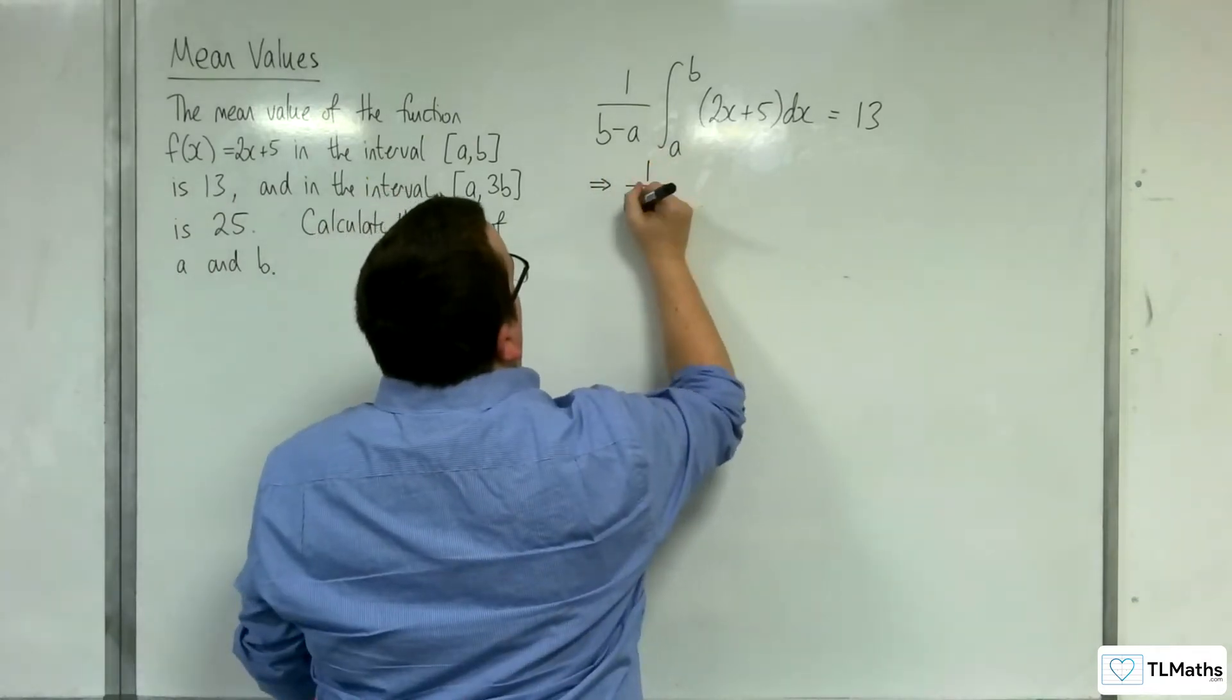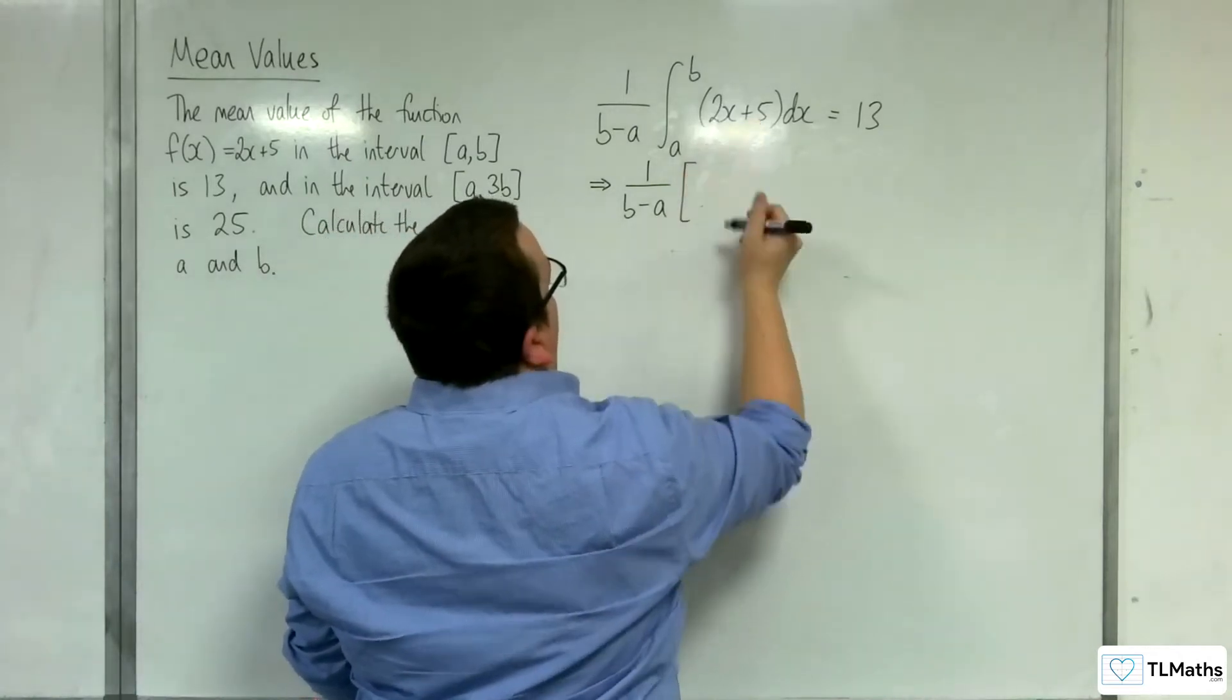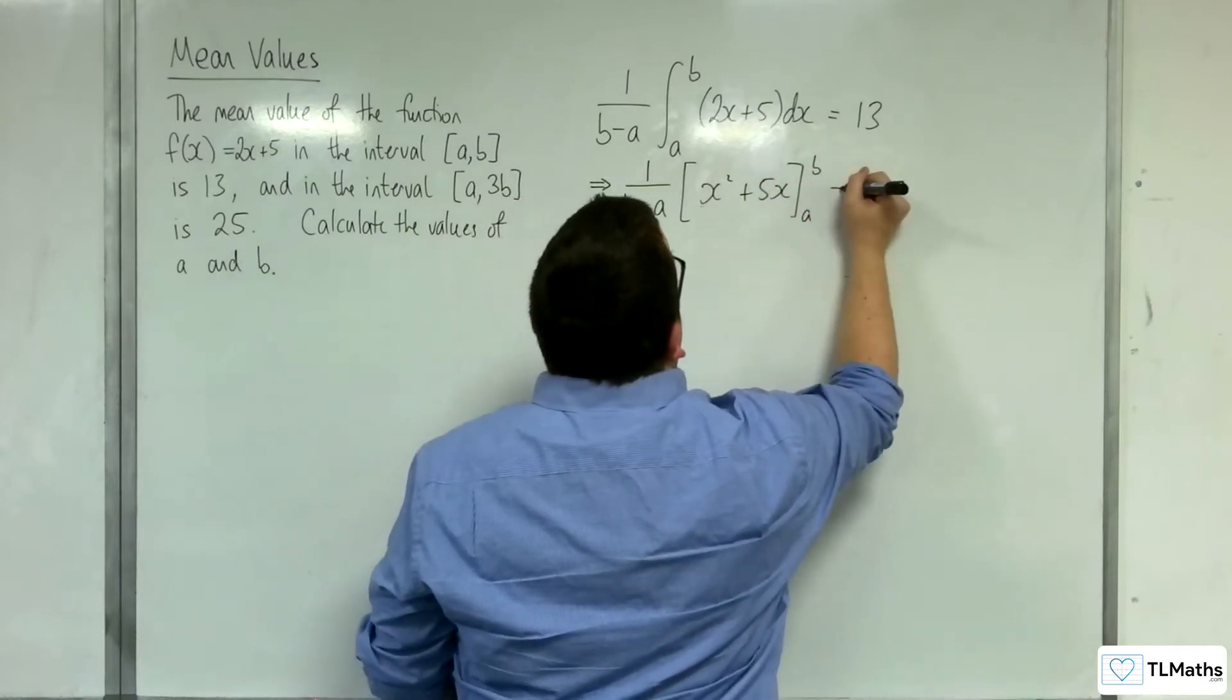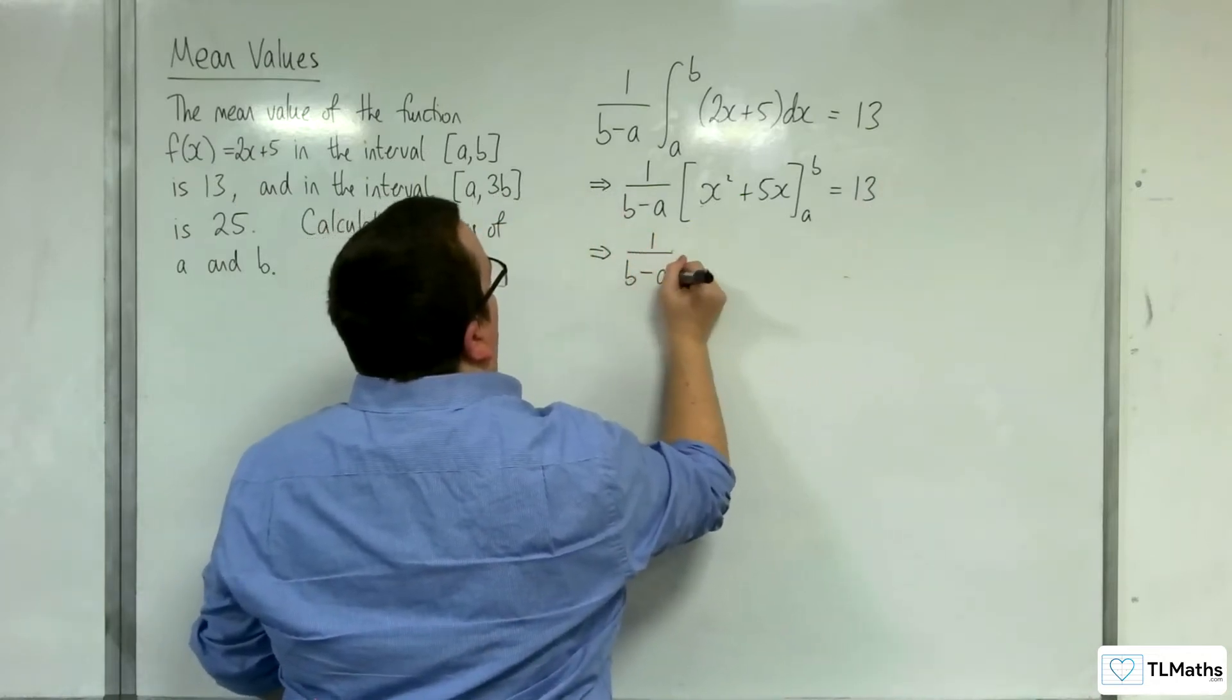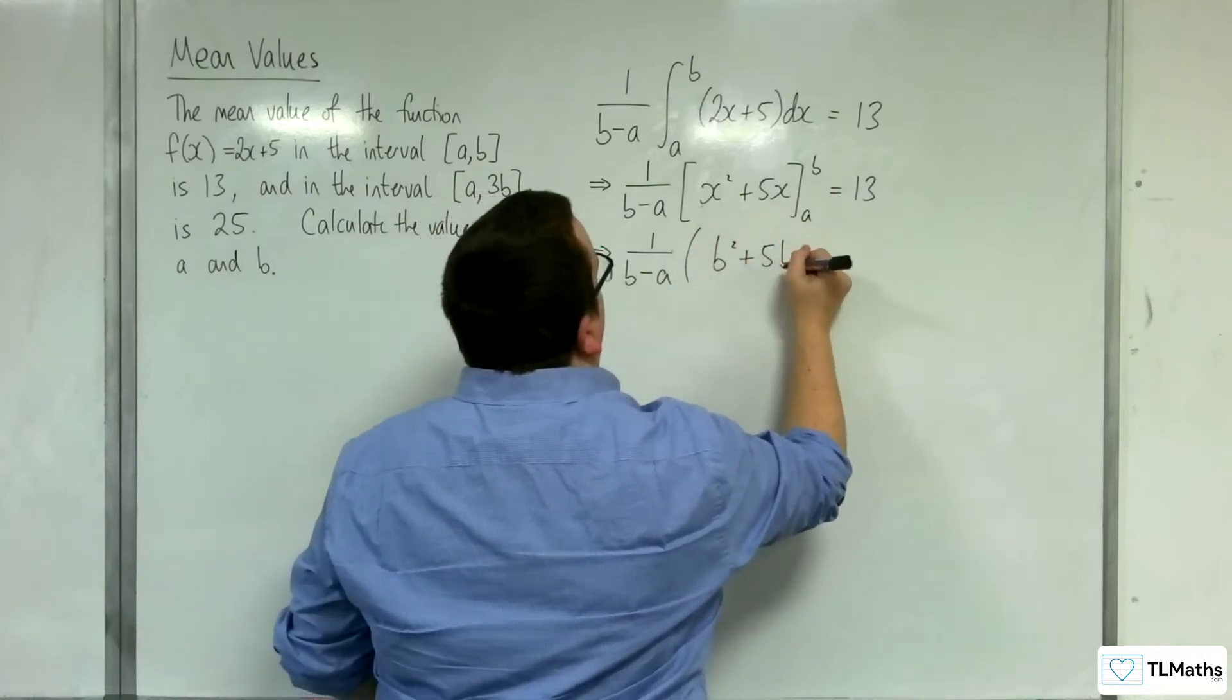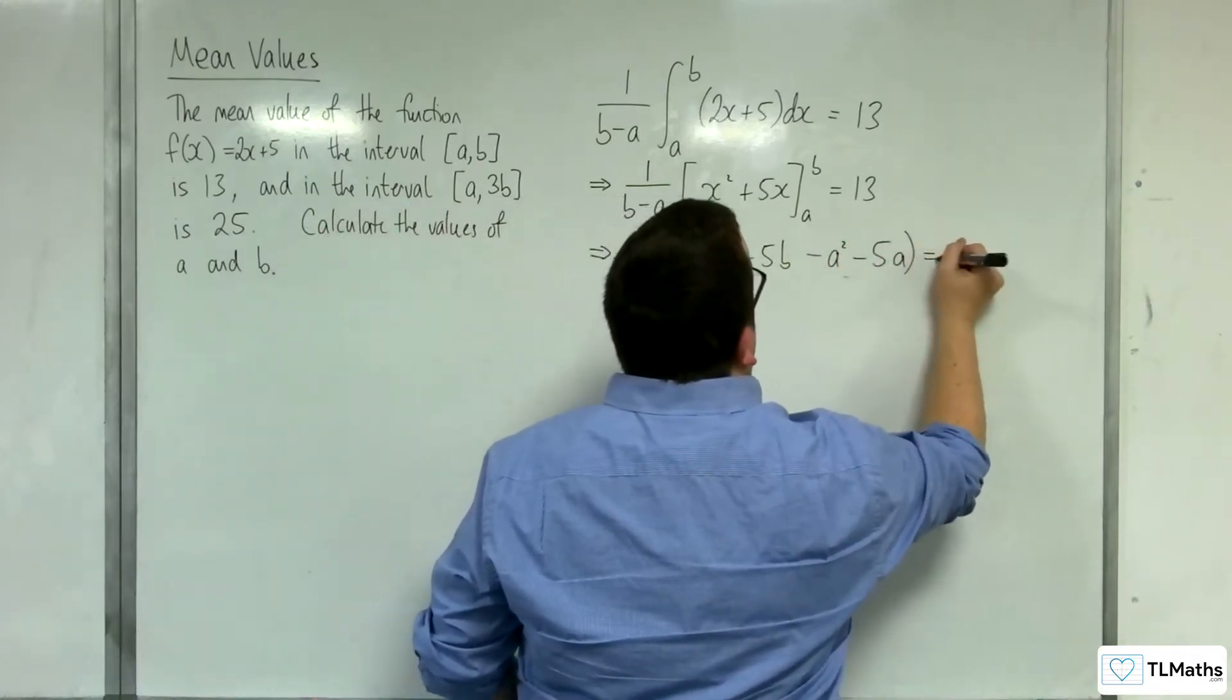So we have 1 over (b - a) times, now we've got the 2x + 5 integrates to x² + 5x, evaluated between a and b. That's going to be equal to 13. So we have 1 over (b - a) times, substituting the b, we get b² + 5b. Substituting the a, we're going to get minus a² minus 5a equals 13.